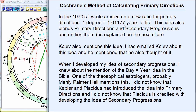When I developed this ratio of one degree equals 1.01177 years of life — not a degree in zodiac longitude, but a degree in the declination arc — I knew about the mention of the day-equals-a-year idea in the Bible from theosophical astrologers, possibly Manly Palmer Hall. I did not know at the time, in the 1970s, that Kepler and Placidus had also introduced the idea of a day into primary directions. But my theory was that primary directions are somehow related to the day-equals-a-year idea that goes all the way back to the Bible.